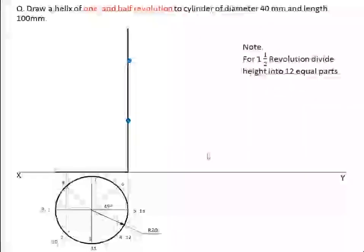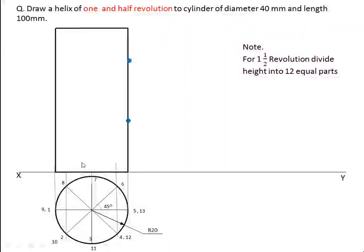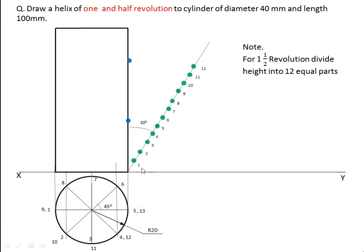Draw the front view — the cylinder looks like a rectangle with diameter 40 mm and length 100 mm. Now divide the rectangular height into 12 equal parts. Why? Because we have to complete one full revolution plus a half revolution — that is one and a half revolutions. So the thread will wind from the bottom for one revolution and then continue for the remaining half.